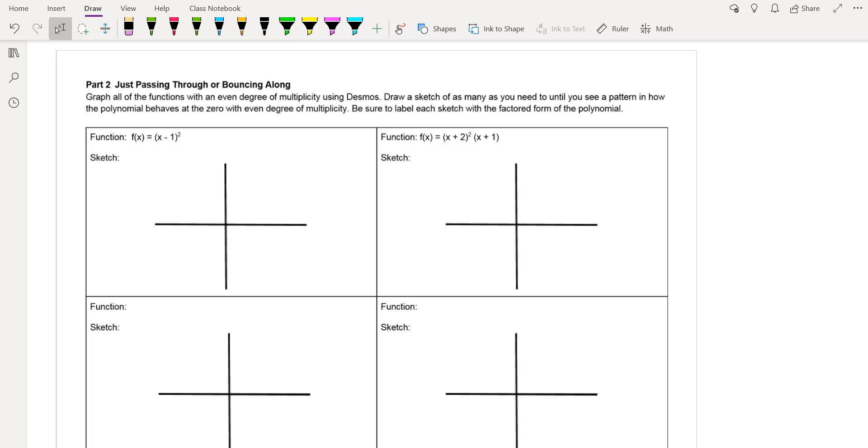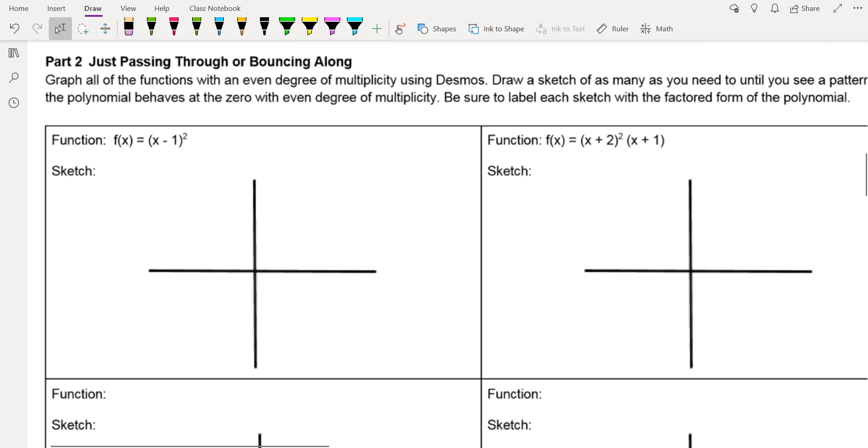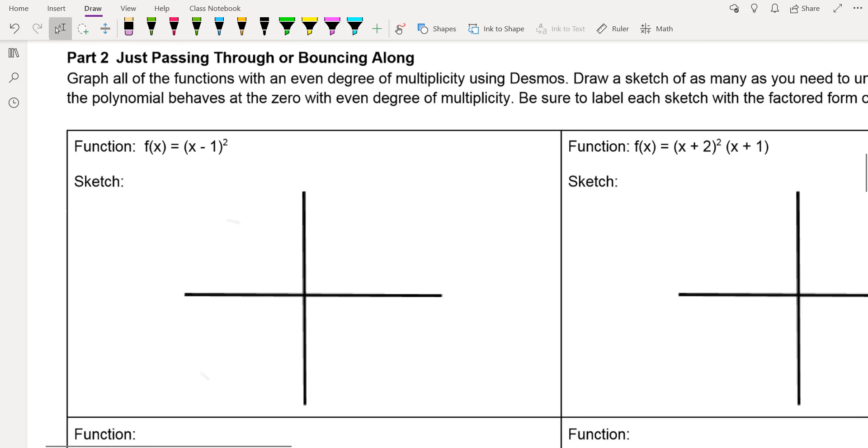And this one should be pretty straightforward. And you should kind of sort of recognize that one already because that is a quadratic. And it's already in what's called vertex form.